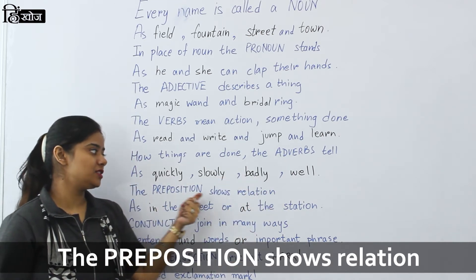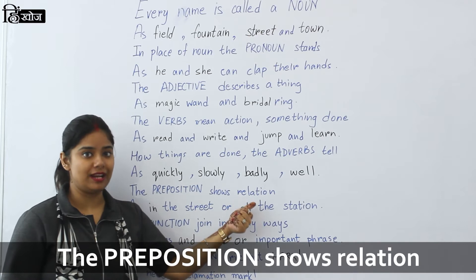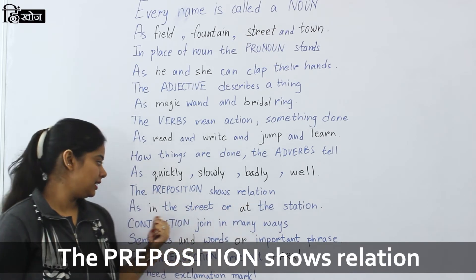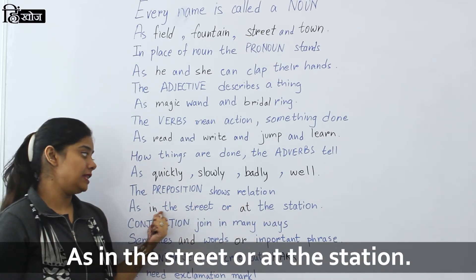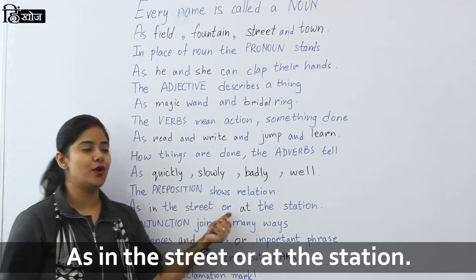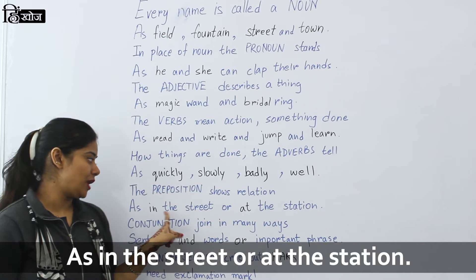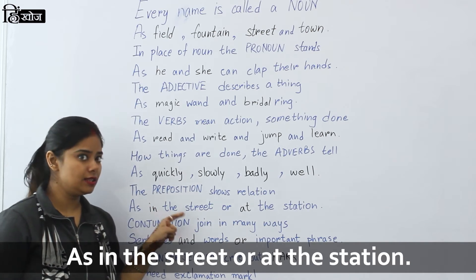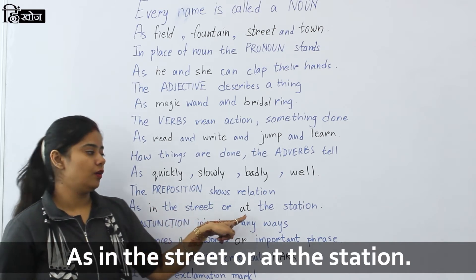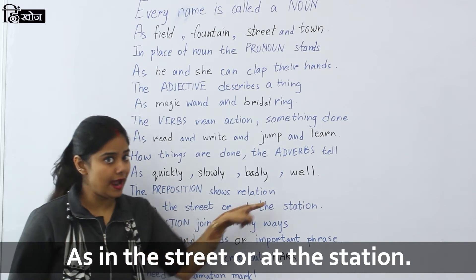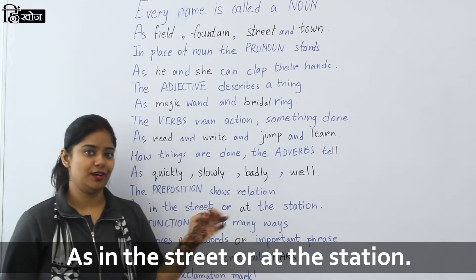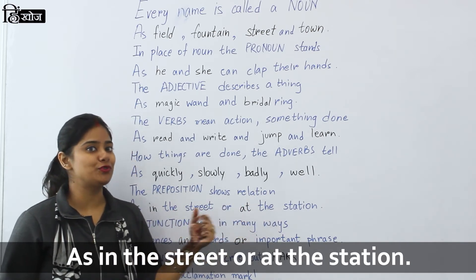The preposition shows relation, as in this street or at this station. So where were they? In this street, and at this station. So here is the position.